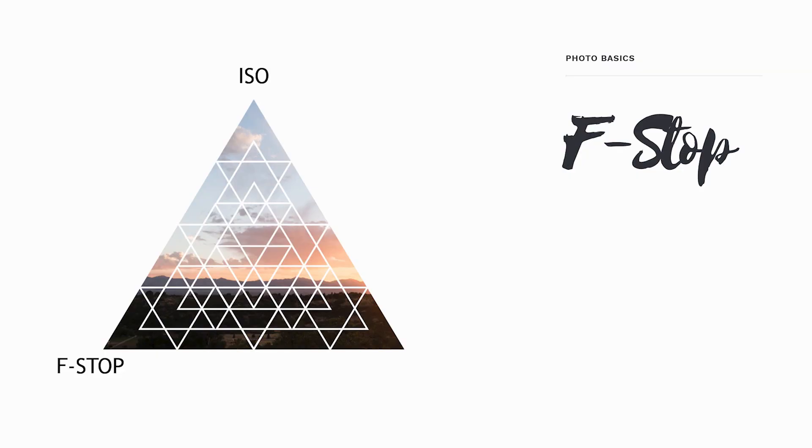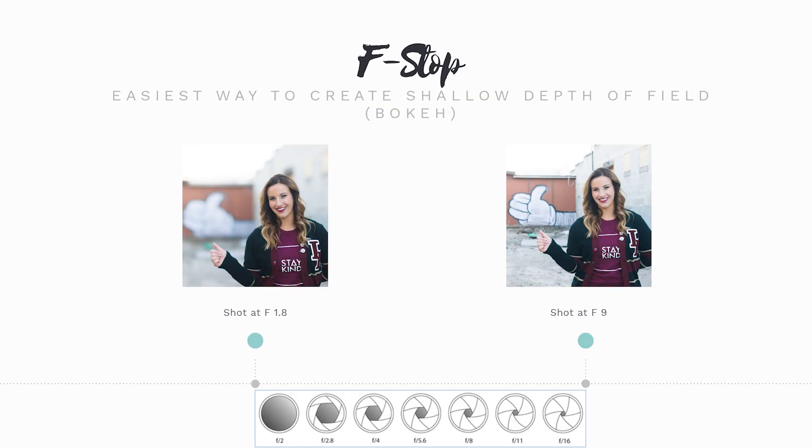The next piece to this exposure triangle is F-stop, and F-stop is my most favorite. It creates something called shallow depth of field, bokeh, or the blurriness in the background — the reason you bought your camera. Portrait mode is pretty awesome right now, but F-stop is like the professional version of portrait mode. Aperture and F-stop are basically the same thing. F-stop also helps control exposure — how light or dark an image is.